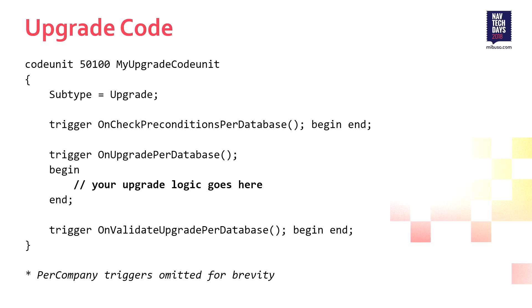I'm going to start by showing what's available in upgrade codeunits in extensions. We have six functions - per-database and per-company copies of three different triggers. The middle one, OnUpgrade per database, is where your upgrade code goes - people understand how to use that one. The OnCheckPreconditions trigger is where you check before starting a lengthy upgrade process. If you have a lot of data, you don't want to get to the last record of five million records and fail on something that could have been detected in milliseconds. If there's a way to detect a condition early, find out if it's going to be a problem before you start going through expensive upgrade operations. Fail fast, allow somebody to fix the data, and then try the upgrade again.